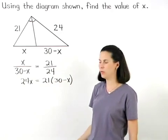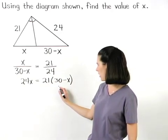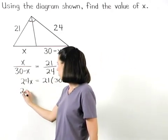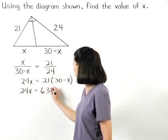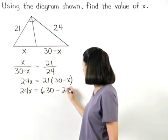Our next step is to distribute on the right side: 24x equals 630 minus 21x.